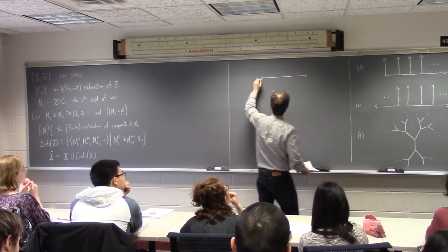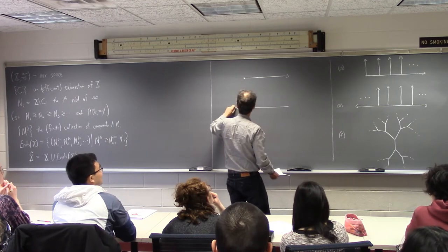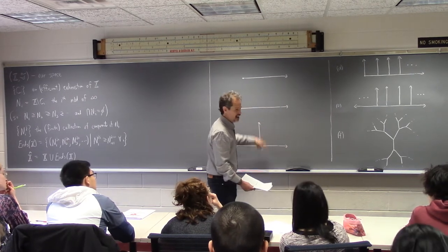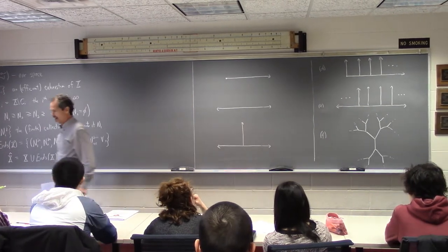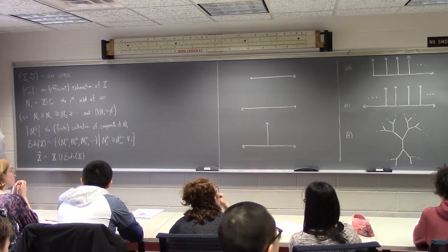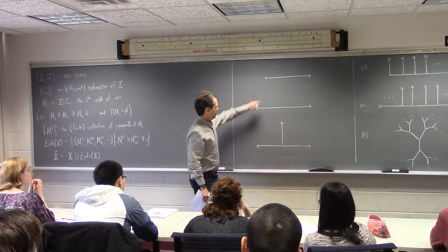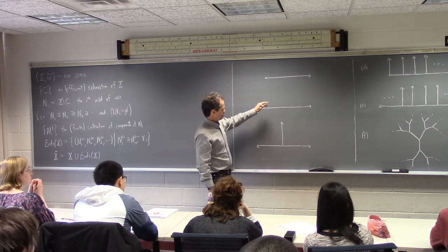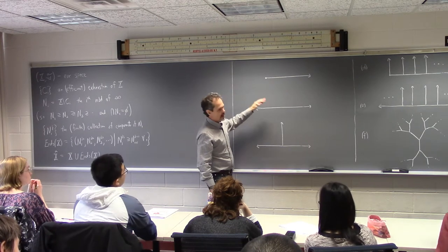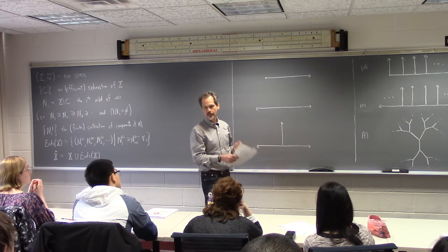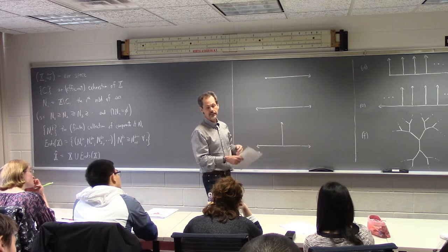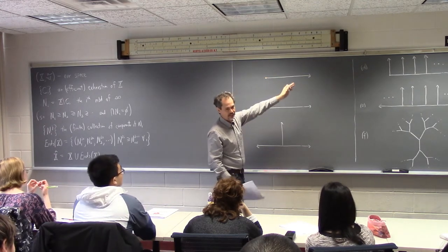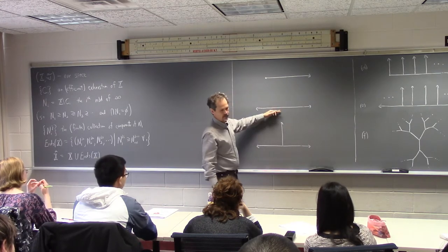Some of the simpler examples we started with: one is just the half of the real line, another is the entire real line, and then I had another space where I took the real line and added a half line — the positive half of the y-axis. It didn't take us very long to distinguish some of these spaces by a very vague notion of how many ends a space has.